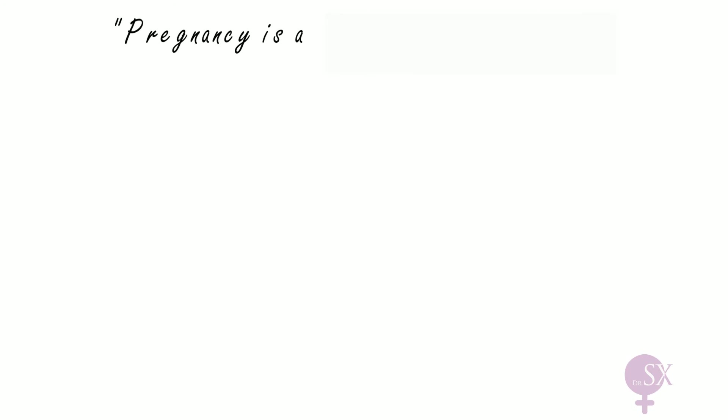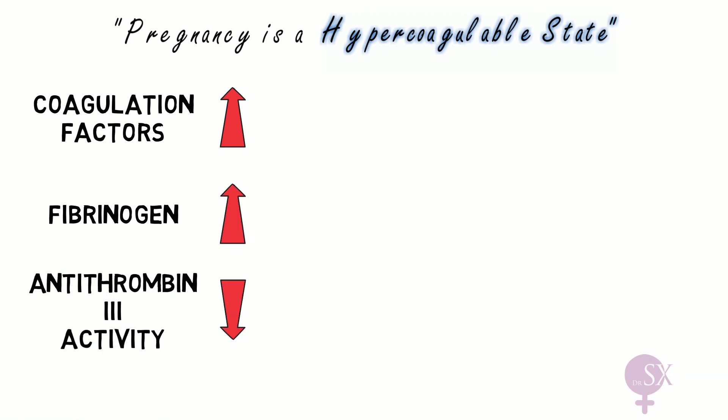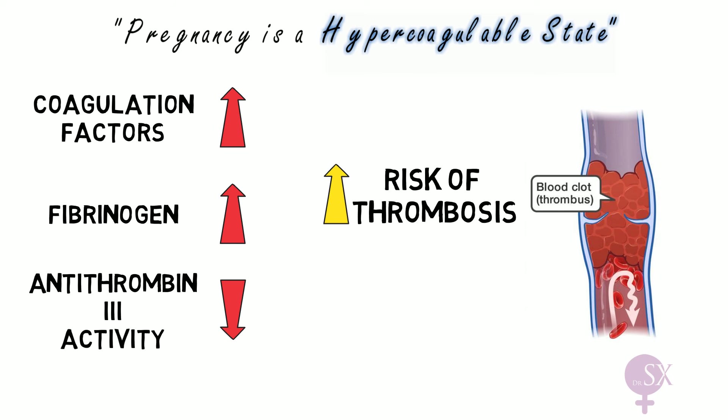You might have heard pregnancy being referred to as a hypercoagulable state. There is increased coagulation and blood clotting going on in pregnancy. This is essentially because of increased coagulation factors, increased fibrinogen levels, and a decrease in antithrombin activity. These all increase the risk of thrombosis in pregnancy making it a hypercoagulable state.